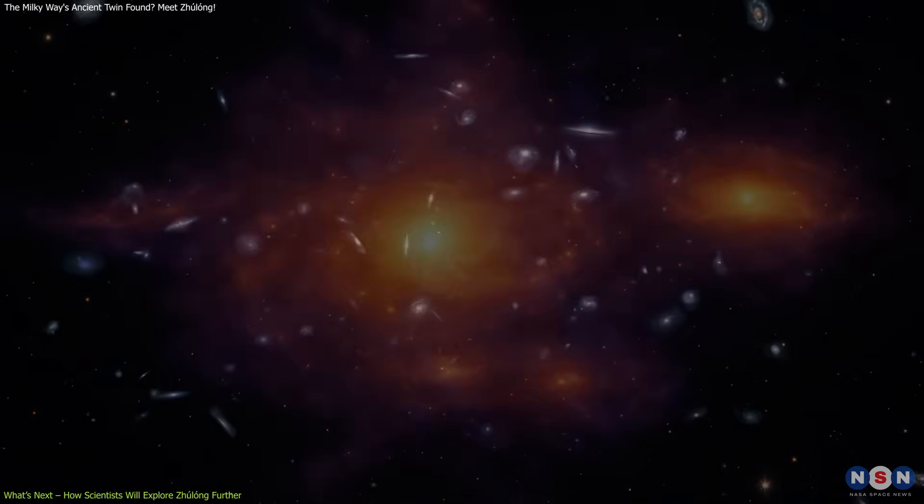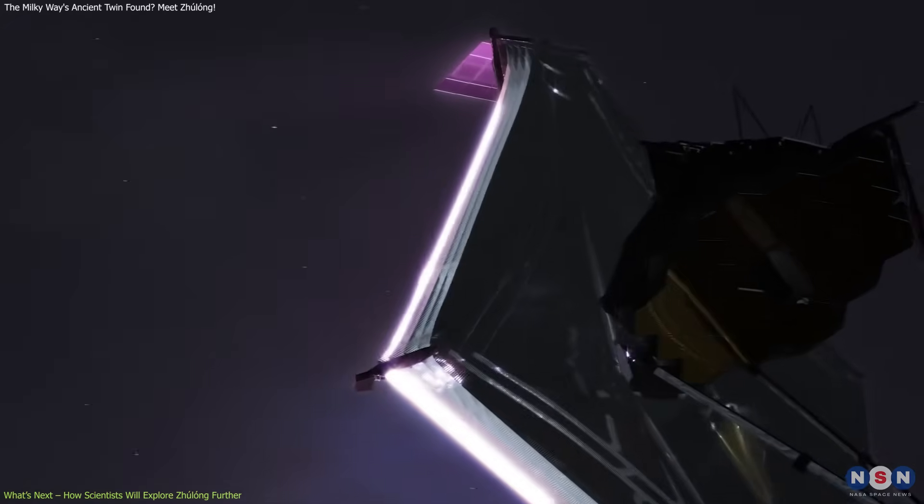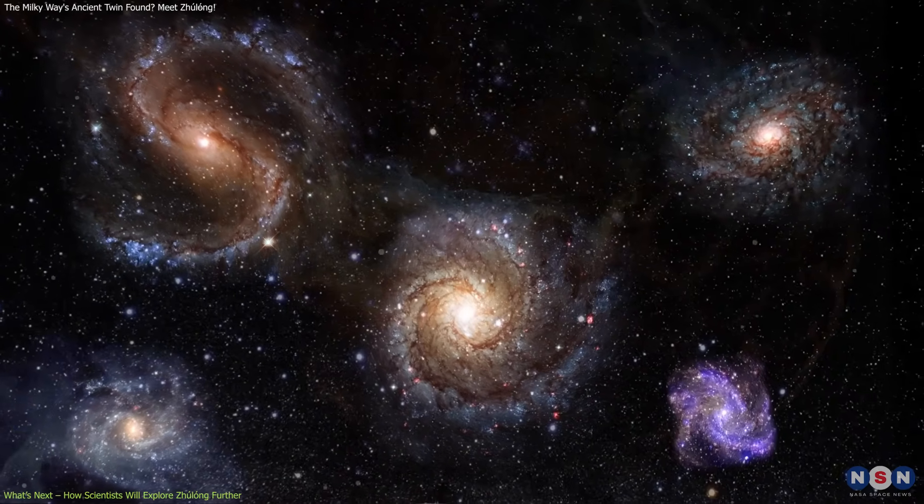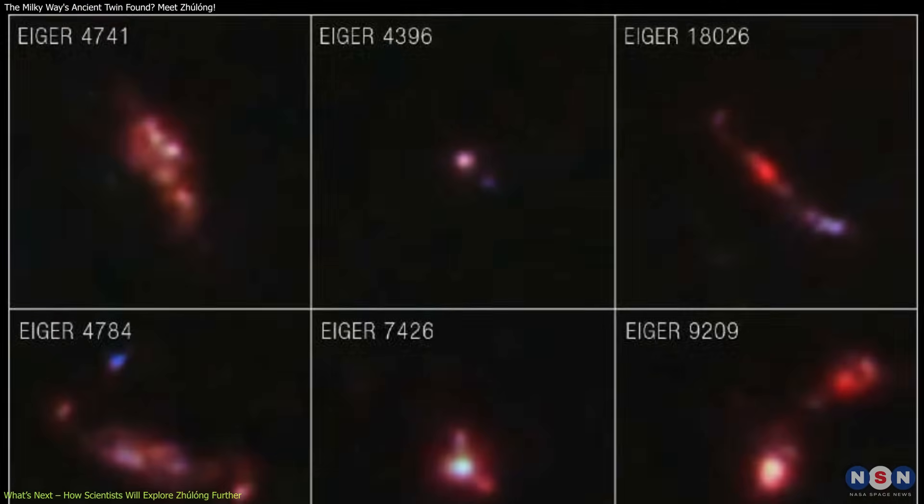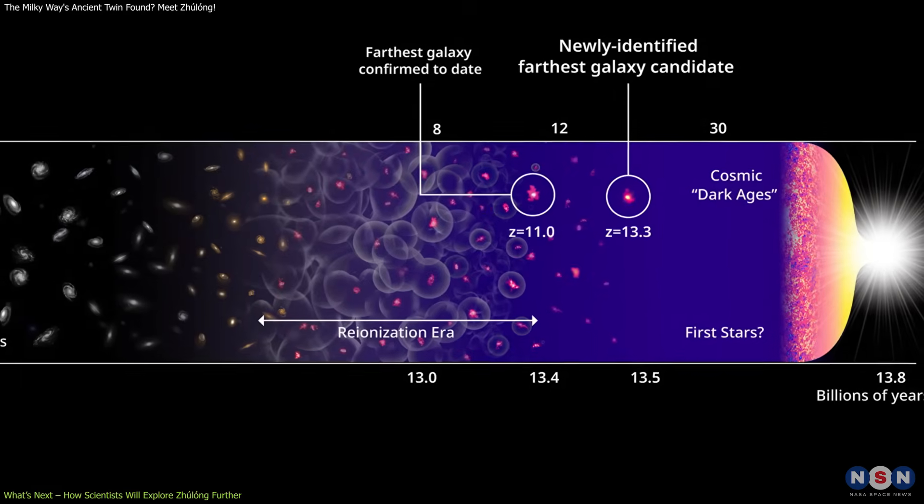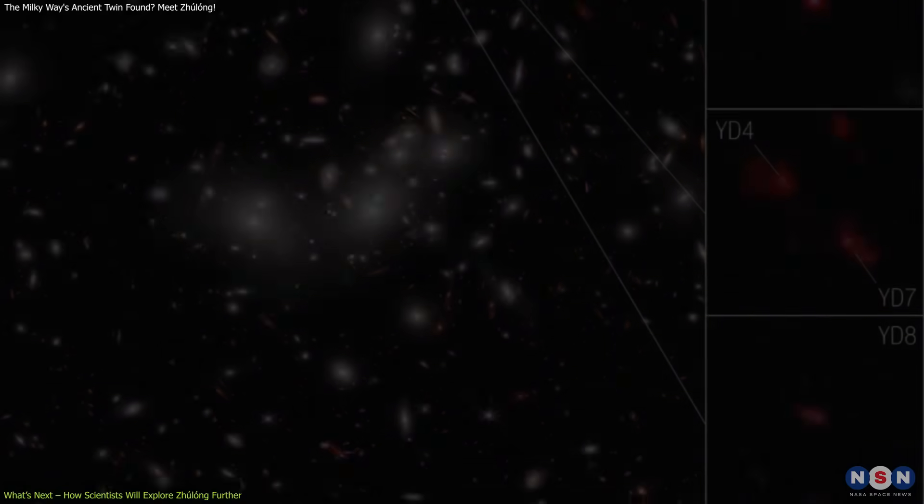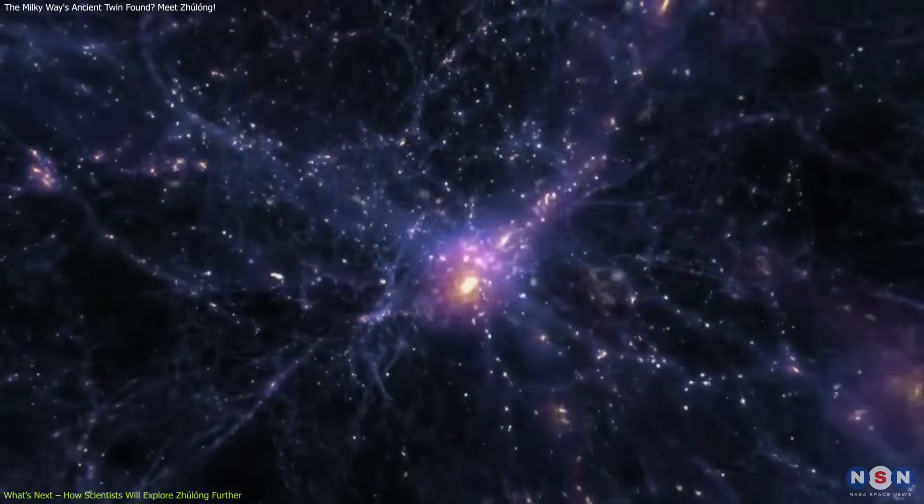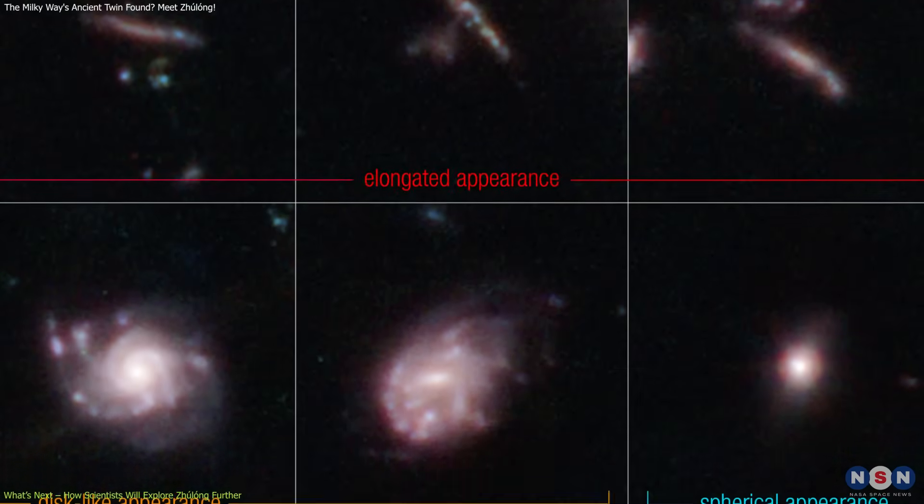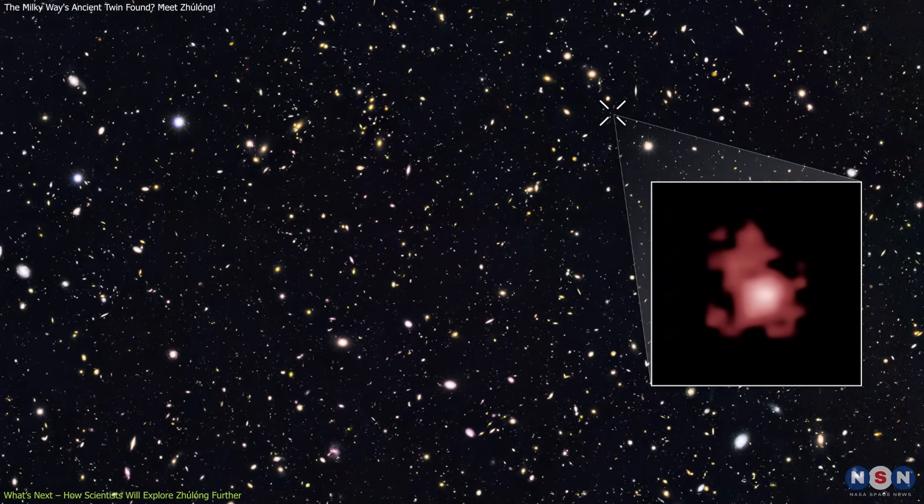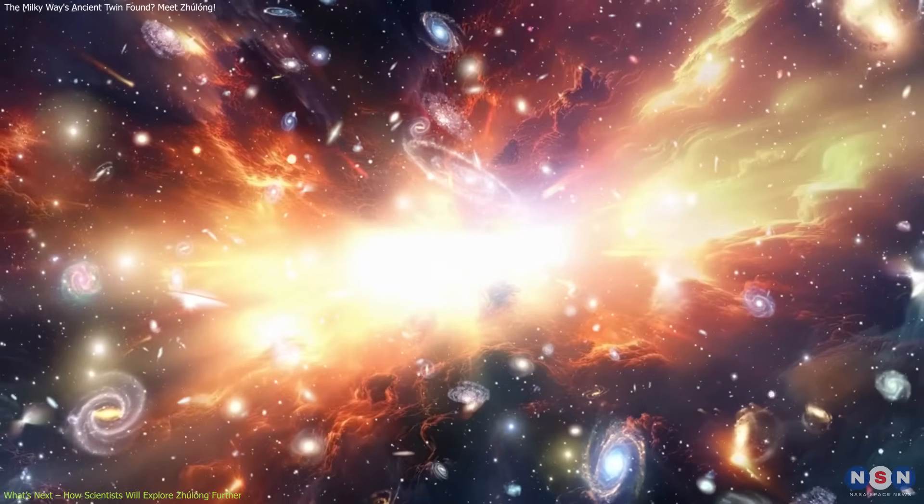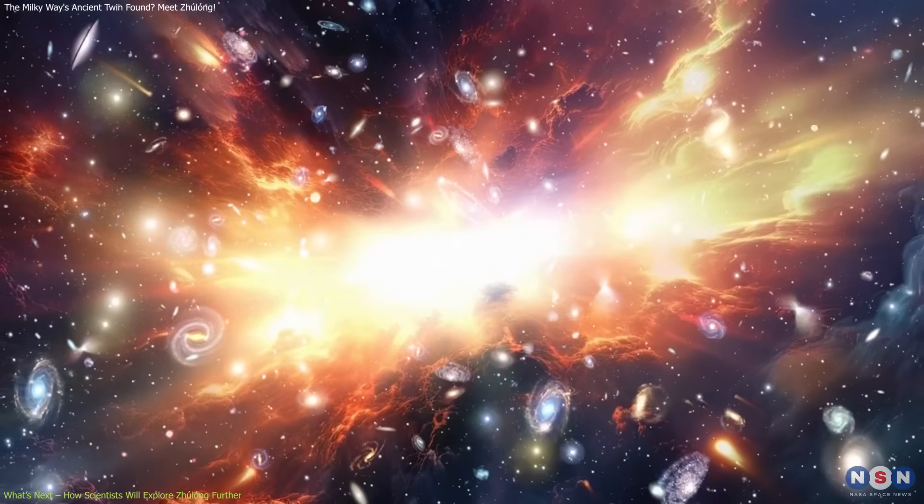Astronomers are now connecting the dots between Zhulong and a growing family of massive galaxies uncovered by the James Webb Space Telescope, galaxies that should not have existed so soon after the Big Bang. In addition to Zhulong, Webb has spotted other impossible galaxies that appear far too massive, too organized, and too mature for their cosmic age. In early 2024, Webb detected a handful of galaxies at redshifts greater than six, meaning they formed just 500 to 800 million years after the Big Bang. Yet some of them rival the Milky Way in mass and structure. Galaxies like CEERS93316 and GNZ11 stunned scientists by appearing not just large, but surprisingly evolved, suggesting that the early universe was far more efficient at building complex structures than our current models allow.